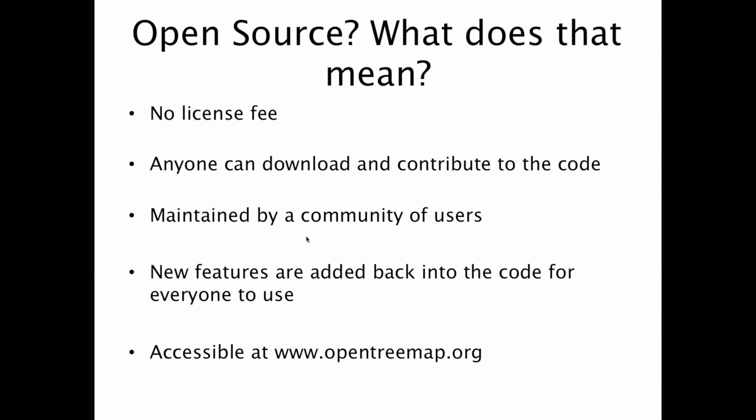Some of you might be wondering what open source software means. It basically means there's no license fee to use the software. Any code we write for the OpenTreeMap platform is made available online where anybody can download it and contribute their own options to the code. It's maintained by a community of users — not just one group of people. If we build something for a city, or another city develops something for the platform, those new features are added back into the code so everybody can use the software. It's accessible at OpenTreeMap.org, though you will need a software developer with experience in geographic software. It was important to us to develop something that wasn't proprietary, that wasn't locked away. The urban forestry world is a very collaborative, welcoming community where sharing information is very important, and we wanted this project to be part of that.